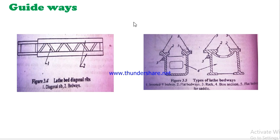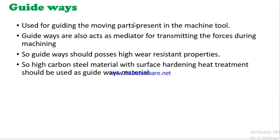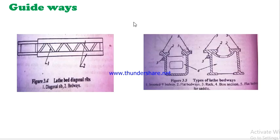The guideways are generated in the bed. High wear resistance properties are required for guideway material. High carbon steel is used along with surface hardening heat treatment. Different types of guideways include inverted bedway, flat bedway, rack, box section, and saddle types.